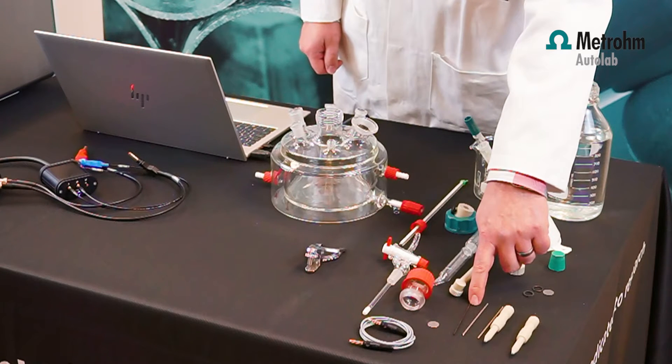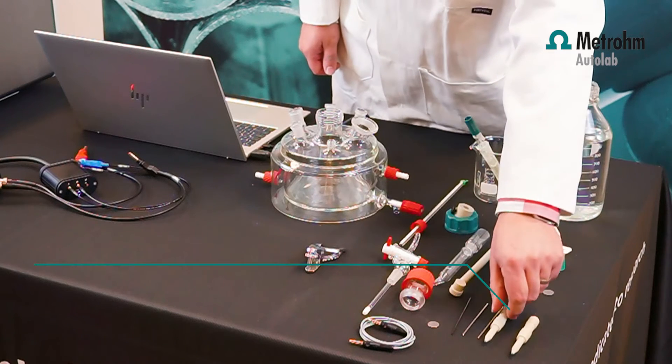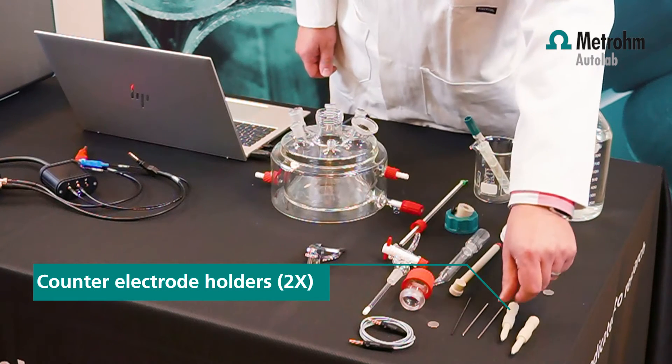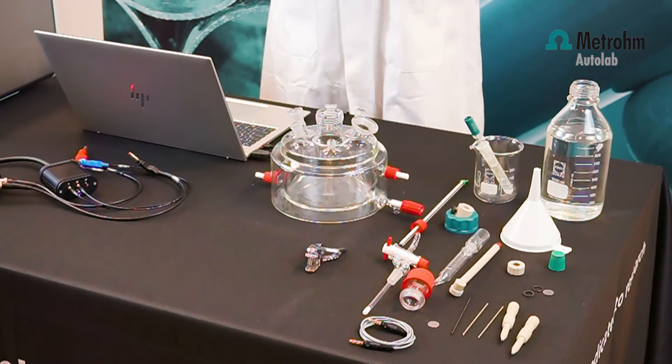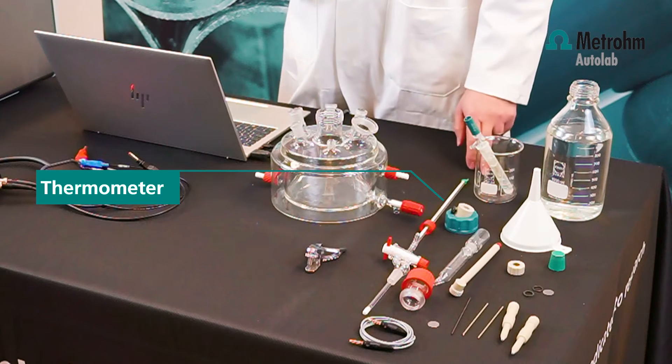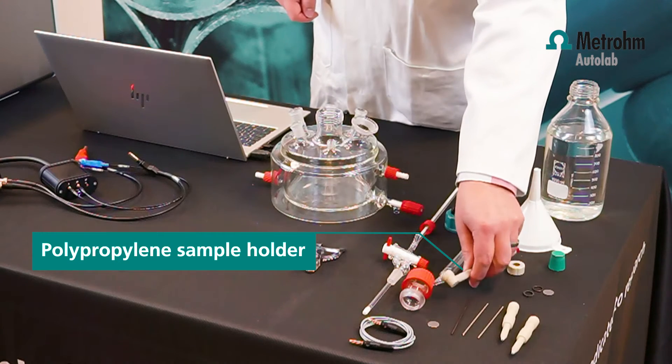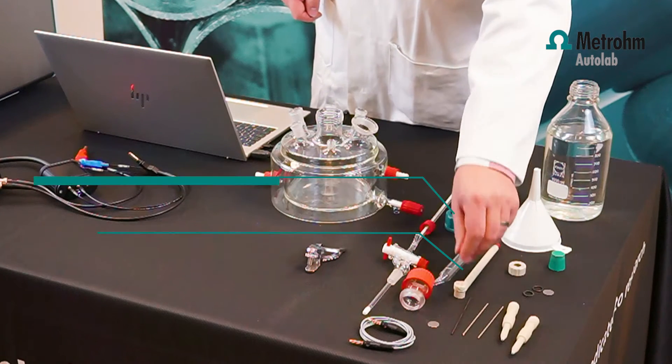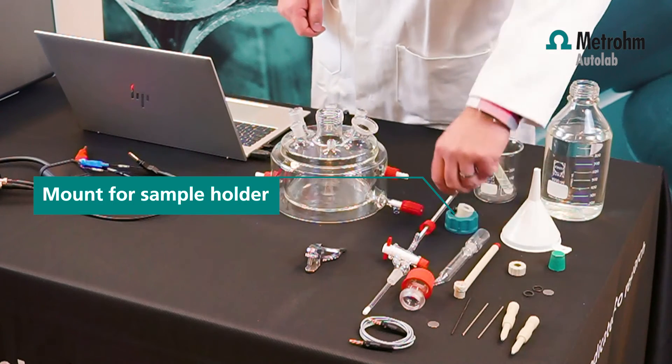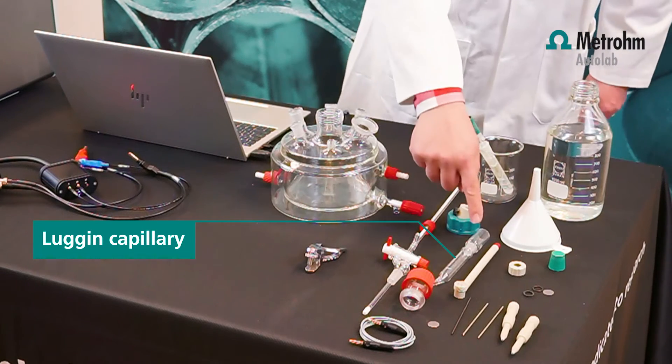The stainless steel rods are replaceable with glassy carbon rods while the same electrode shafts can be used. You have two electrode shafts. Then we have a thermometer that goes from 0 to 150 degrees centigrade, a polypropylene sample holder, and a mount for the sample holder.